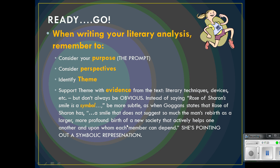Instead of saying 'Rose of Sharon's smile is a symbol' or 'this is a metaphor,' be more subtle and do as Goggins did — state that Rose of Sharon has 'a smile that does not suggest so much the man's rebirth as a larger, more profound birth of a new society that actively helps one another and upon whom each member can depend.' She's pointing out symbolic representation, and she's using words like 'suggest,' 'represent,' and 'illustrate' — code words for symbol or metaphor — because there's no need to always use the word itself. The more subtle you can be, the better.